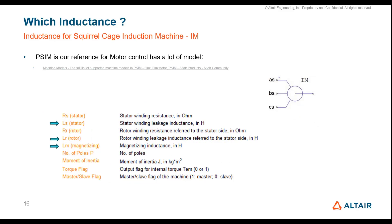The third example is the induction machine. In PASIM, the induction machine uses a steady-state single-phase equivalent scheme, where we need the stator winding leakage inductance, the rotor winding leakage inductance, and the magnetizing inductance. This is the model we have, and there are other models for the induction machine as well.